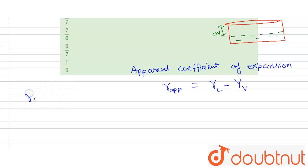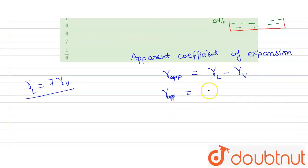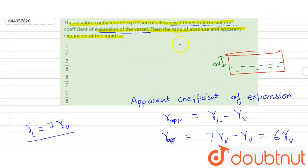gamma_l is equal to seven times gamma_v. Here the coefficient of expansion of the liquid is seven times that of the volume coefficient of expansion of the vessel. This is given. So we put this value in: gamma apparent will be equal to seven gamma_v minus gamma_v, which equals six gamma_v. This is the value of gamma apparent.